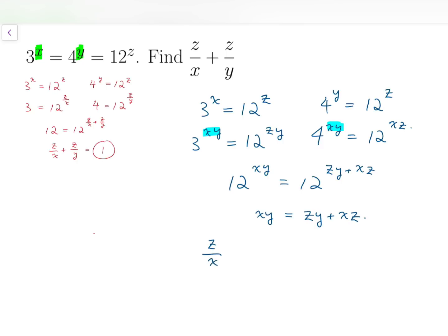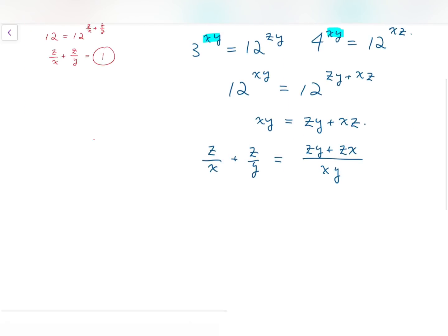Then, our given expression is z over x plus z over y. If we add them together, combine the fractions, we have zy plus zx over xy. And, from above, we know that the top and the bottom are equal. So, the fraction is equal to 1.